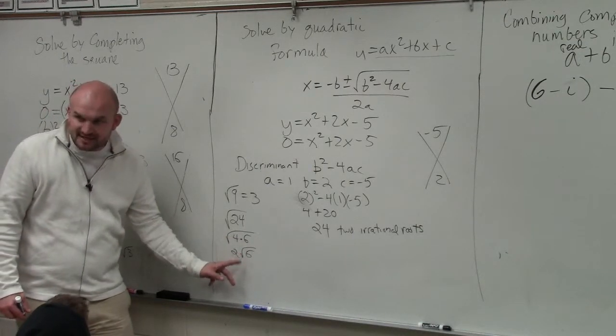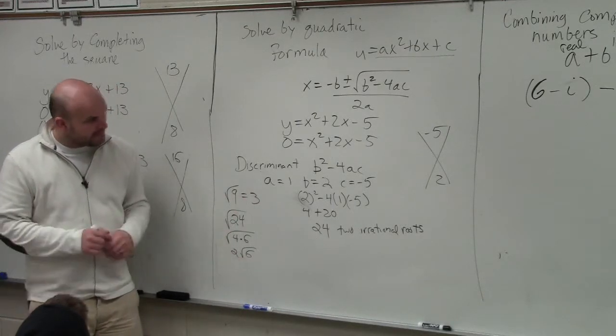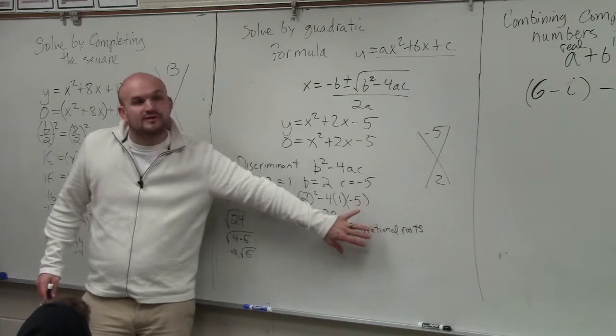So we take the square root of 4, so you have 2 square root of 6. Do you guys see? Square root of 6, again, is not a rational number. That's irrational. So now, that's just how we classify them, which is going to be important for your test.